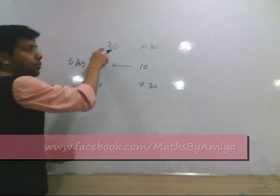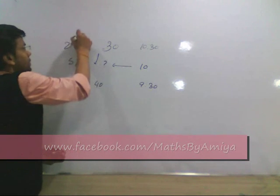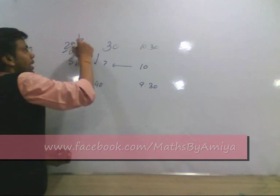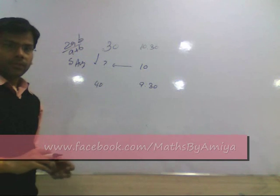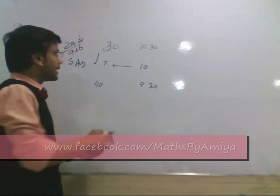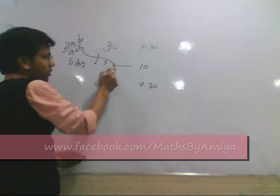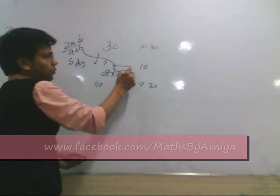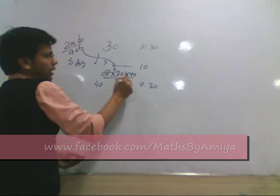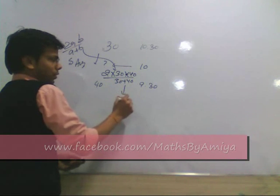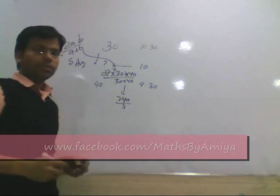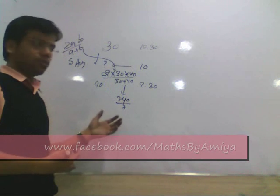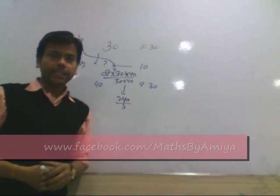For the same distance for two speeds, our speed average is 2ab upon a plus b. So our answer should be nothing but, putting this value for this given condition, 2 into 30 into 40 upon 30 plus 40, that is 240 by 7. So this is my answer, and that is equal to 34 point something, which is option D.